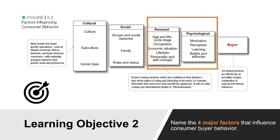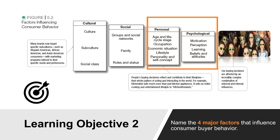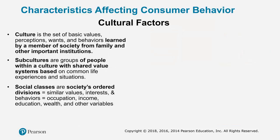The type of purse or backpack or laptop bag that you purchase says a lot about not only your cultural needs but your social status. Then you have personal and psychological needs. Your personal needs include your age, lifestyle, occupation, and economic status. Your psychological needs are the motivation behind buying that purse, your perception of carrying any particular product, and your beliefs and attitudes. All of this makes up the buyer's black box and will ultimately impact whether they're going to purchase your product or not.